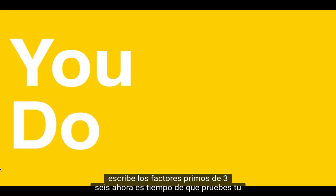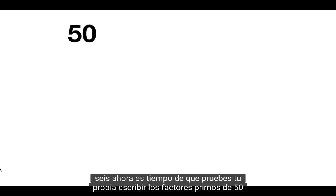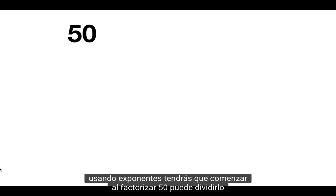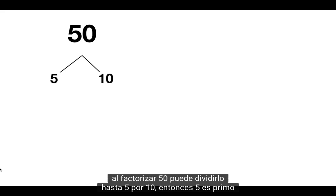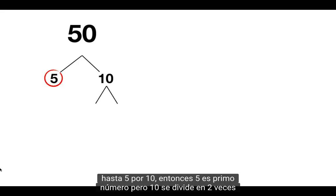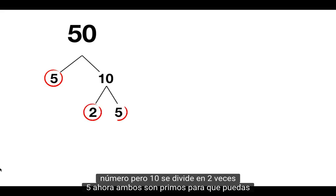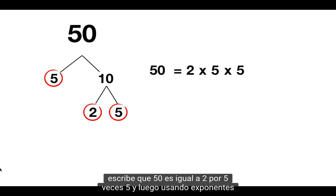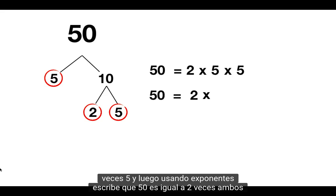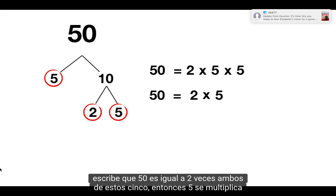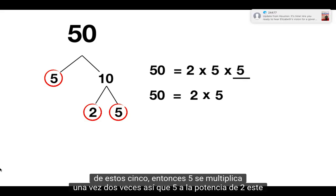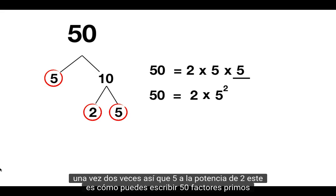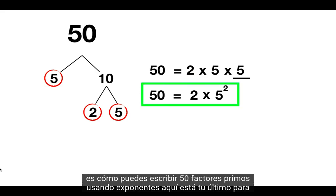Now it's time for you to try on your own. Write out the prime factors of 50 using exponents. You have to start by prime factoring 50. You can split it up into 5 times 10. Then 5 is a prime number, but 10 gets split up into 2 times 5 — now both of those are prime. So you can write that 50 is equal to 2 times 5 times 5. And then using exponents, 50 is equal to 2 times 5 to the power of 2. This is how you can write 50's prime factors using exponents.